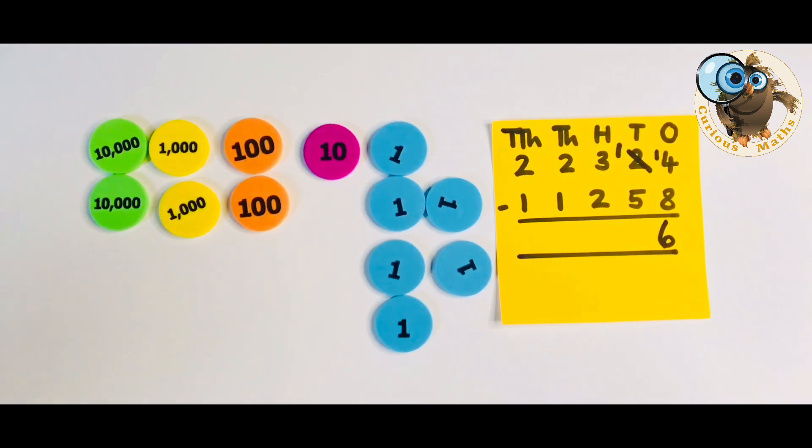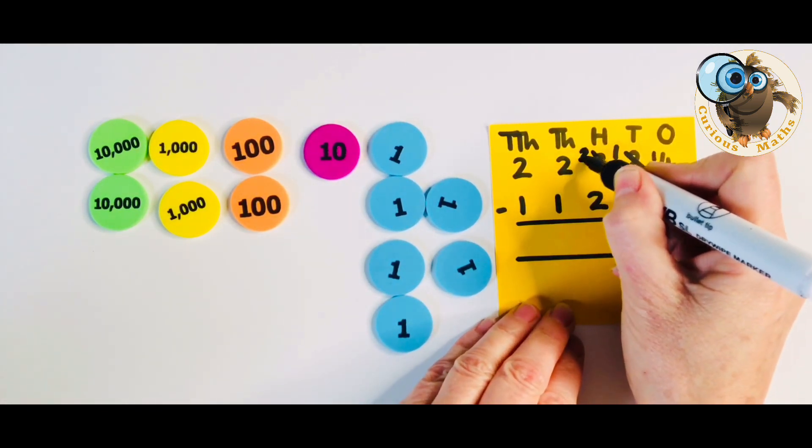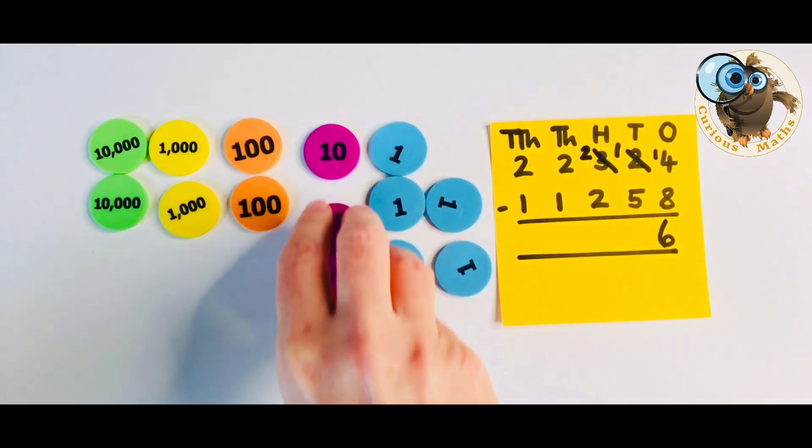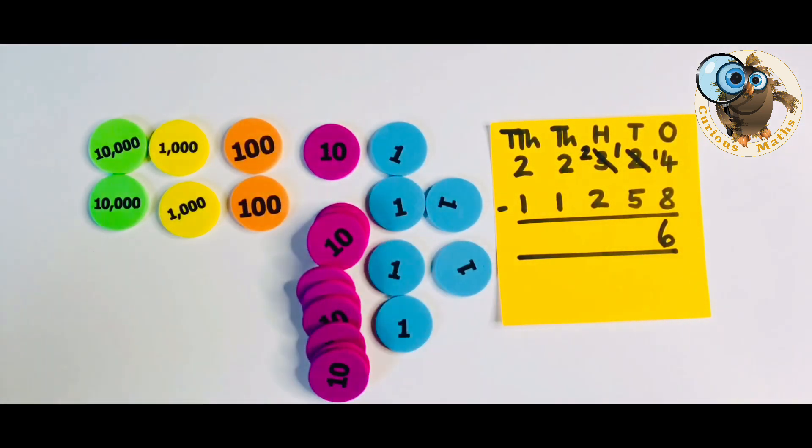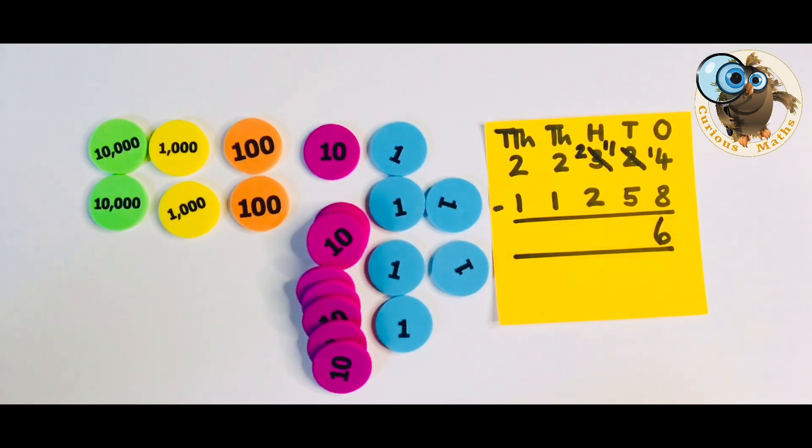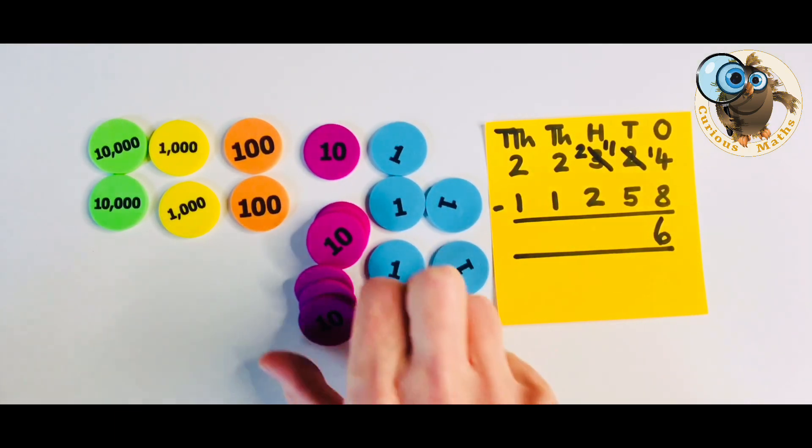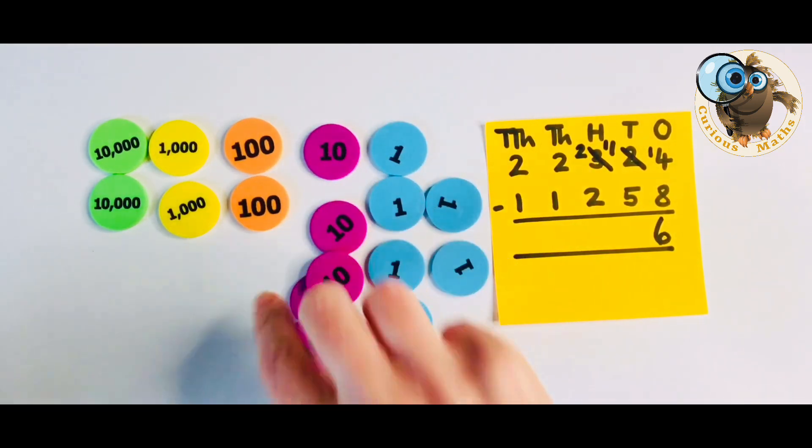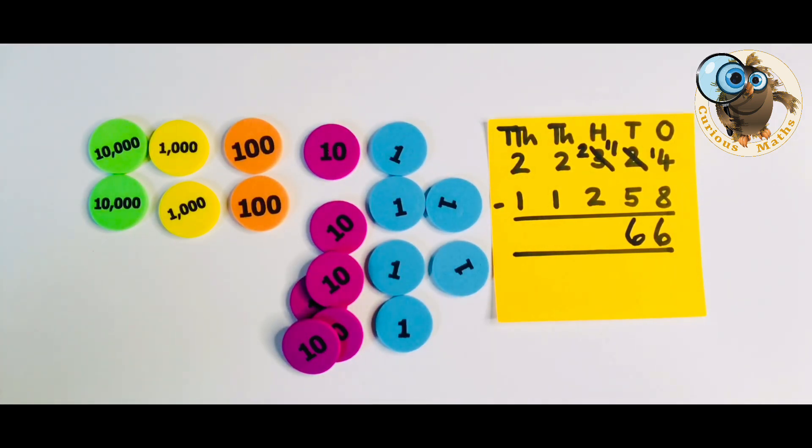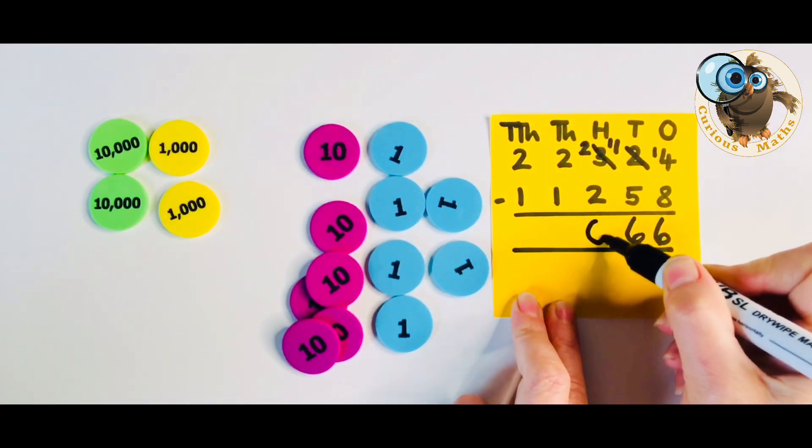I'm going to exchange one of those hundreds so I have two hundreds left and I'm going to exchange it for 10 tens which is equivalent to 100. And I'm going to add it here so now I have 11 tens and I need to take five tens away. I have six tens remaining. To the hundreds column I have 200 and I need to take 200 away quite straightforward. I have zero hundreds remaining.